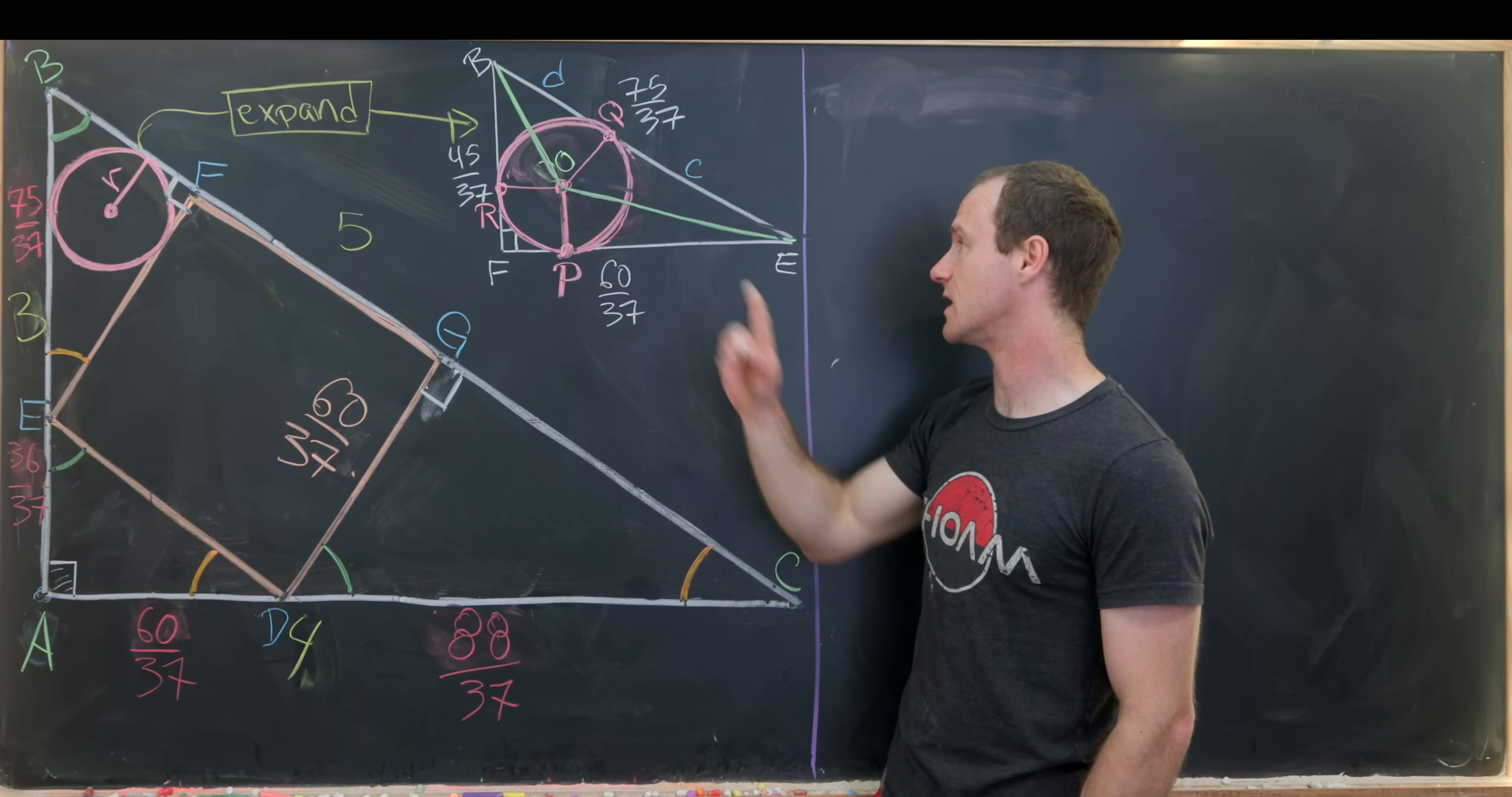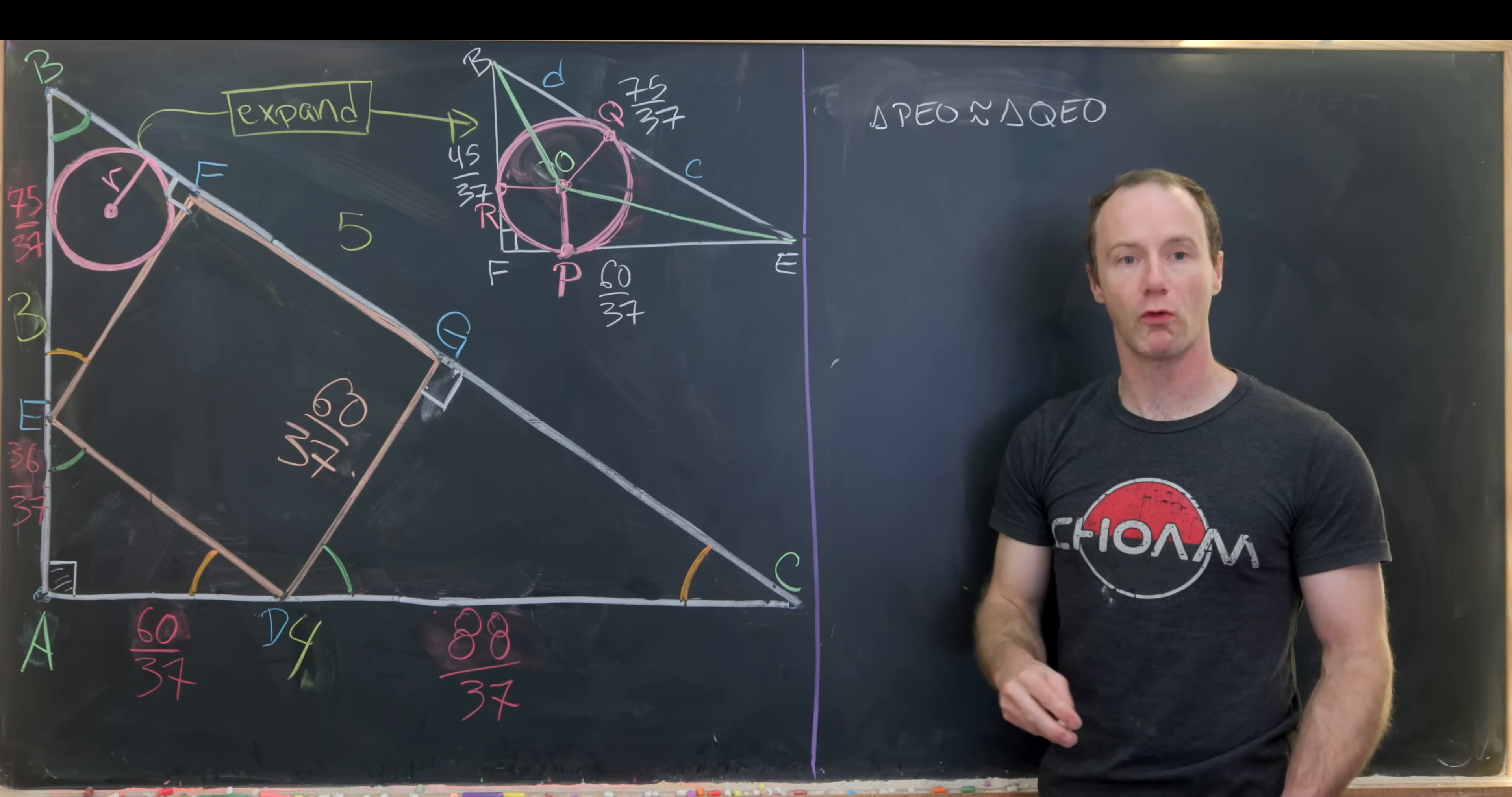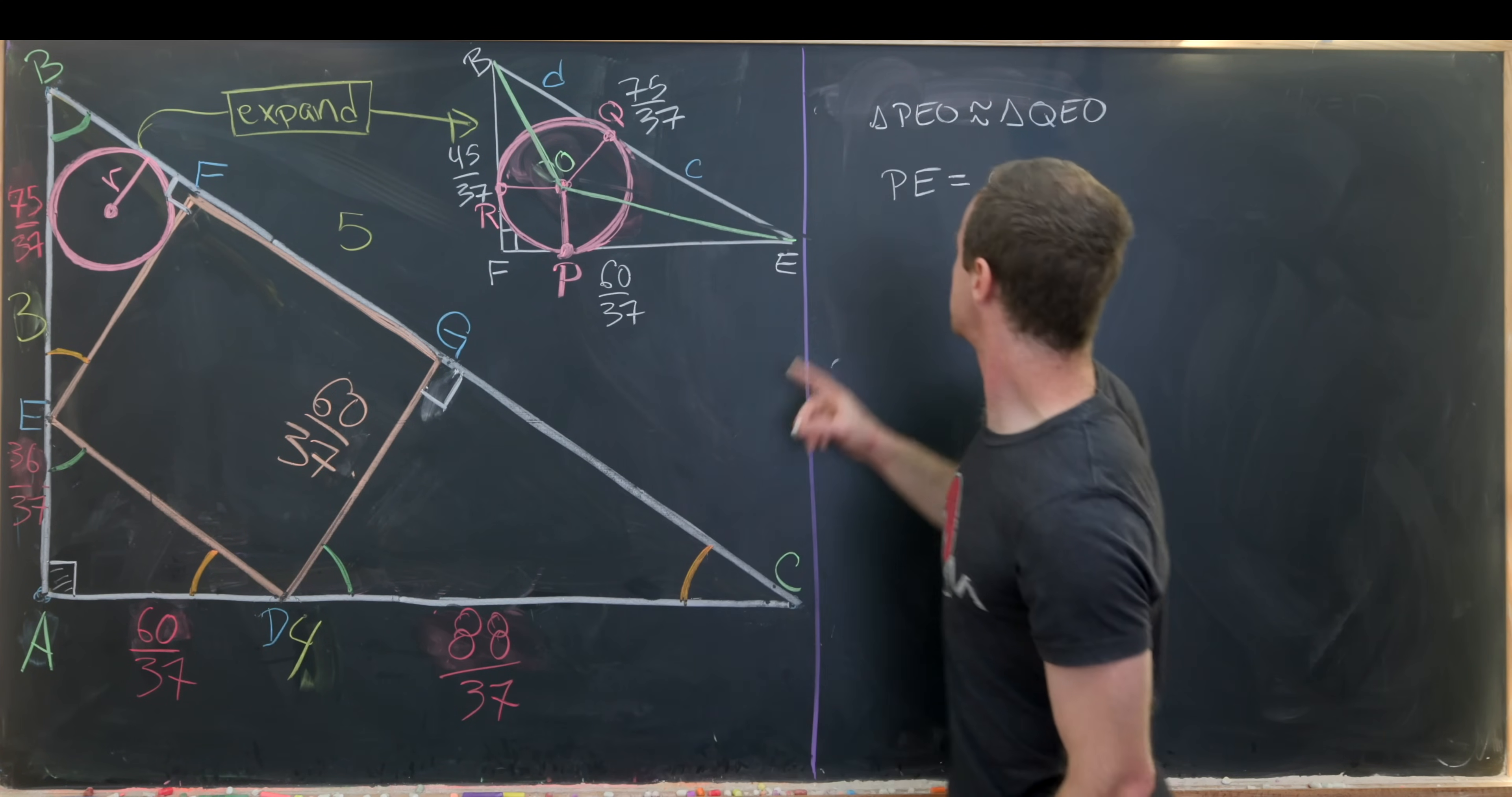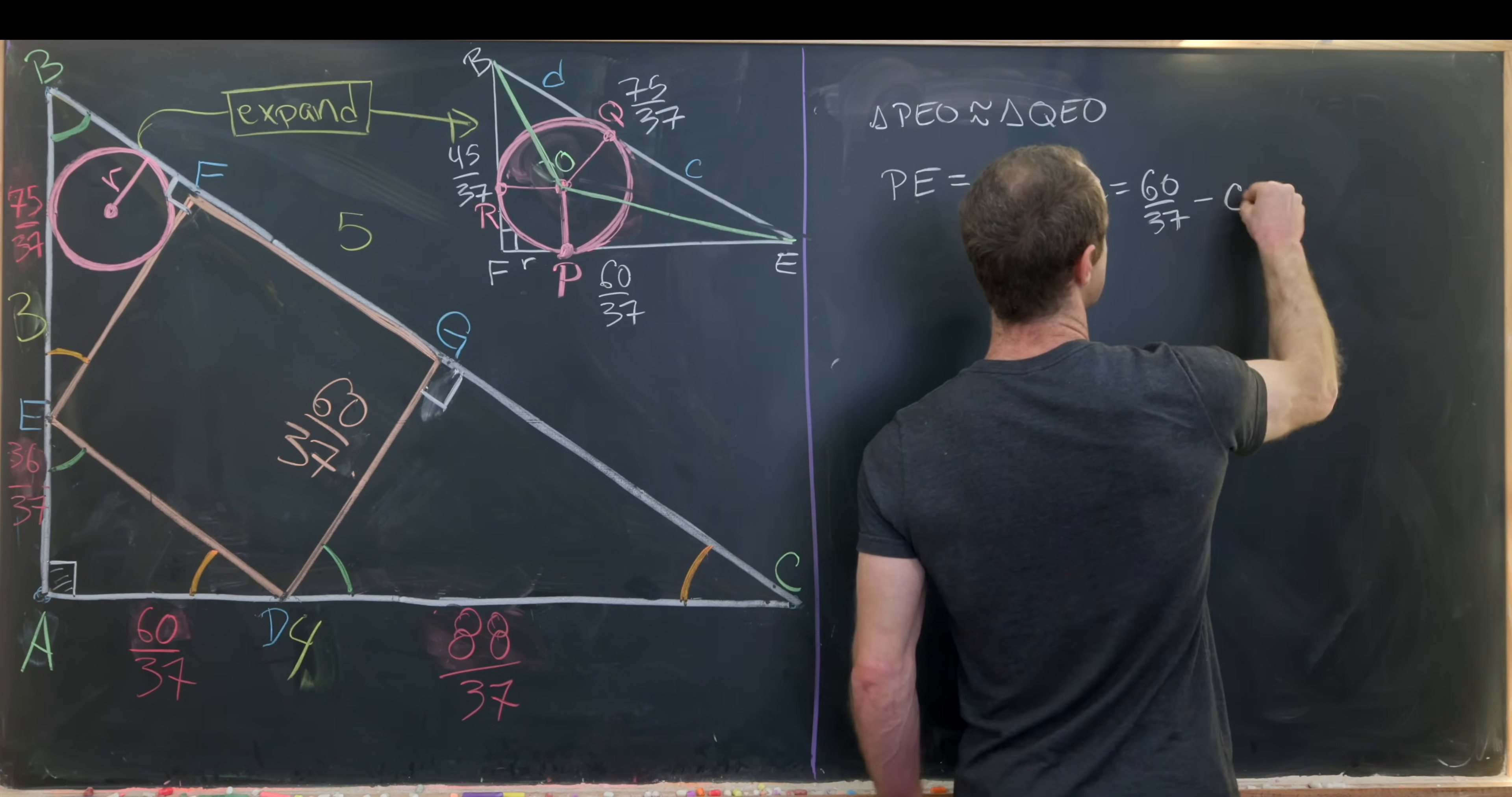But now since this is the center of the incircle, we know that E to O bisects this angle right here. But since it bisects this angle and we share an edge here, an edge here and enough angles to make congruent triangles, we know that triangle PEO is congruent to triangle QEO. But that means the corresponding side lengths are the same. So in particular, PE has got to be equal to length QE, which I've called c. So now we just have to figure out what length PE is. But that's pretty easy to calculate because this is a radius transposed down here. This is r. This whole length is 60 over 37. So that tells us that c is equal to 60 over 37 minus r.